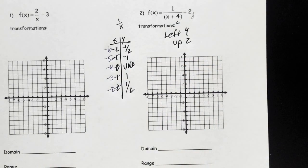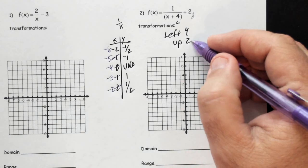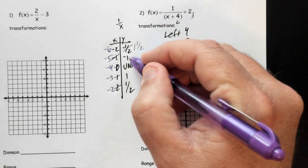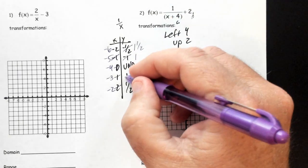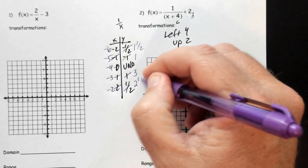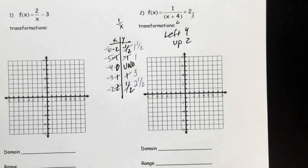Then we would have to add two to all the y values for this one. So when we add two, that's going to be one and a half, one, three, and then two and a half.